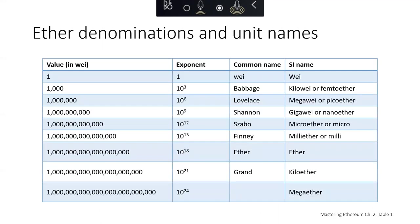Here's a look at different unit names. We've got Ether, which is 10 to the 18 Wei. Babbage is 10 to the 3 Wei. Lovelace is 10 to the 6 Wei. Shannon is 10 to the 9 Wei. Szabo is 10 to the 12 Wei. Finney is 10 to the 15 Wei. And if you have 1,000 Ether, you've got a Grand, also known as a Kilo Ether. And 10 to the 24 would be a Mega Ether.